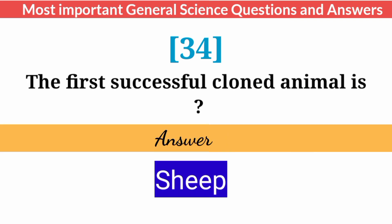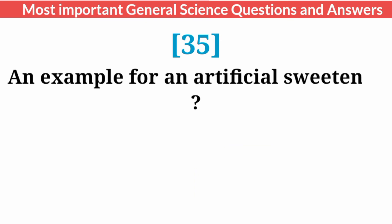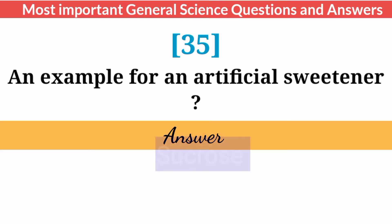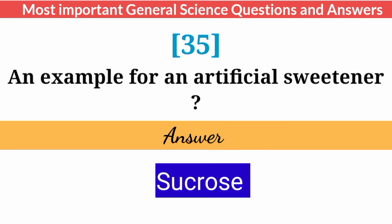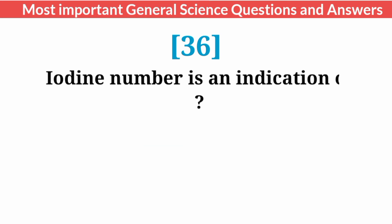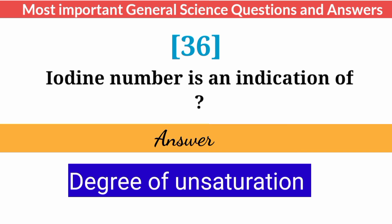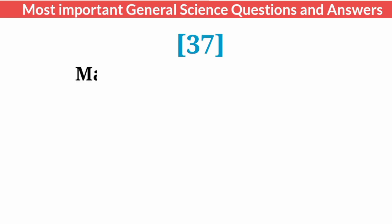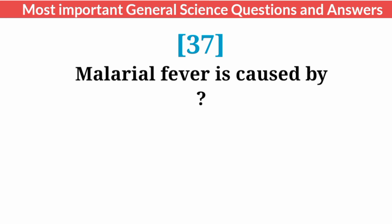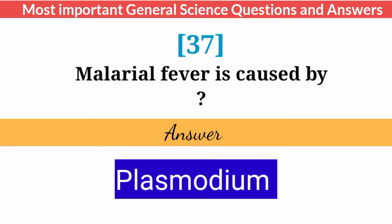Give an example of an artificial sweetener. The iodine number is an indication of the degree of unsaturation. Malarial fever is caused by? Answer: Plasmodium.